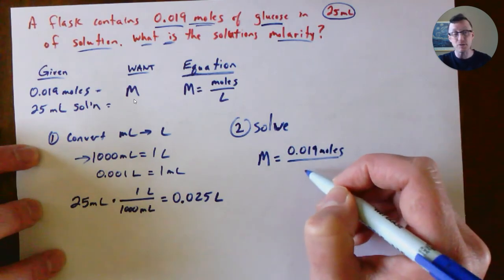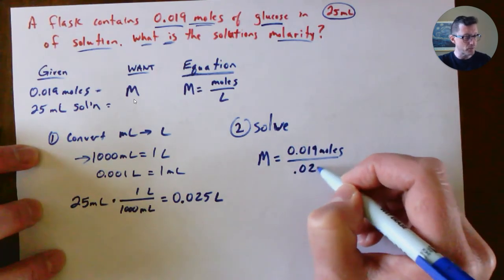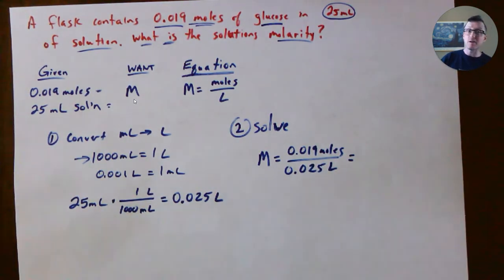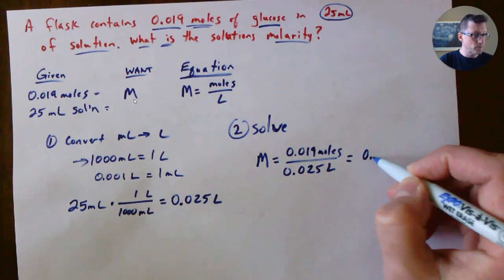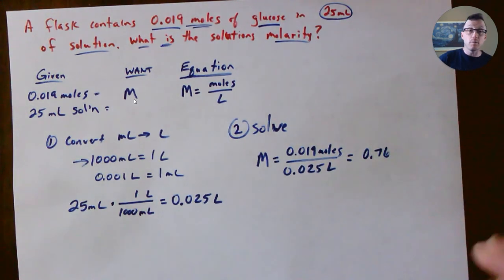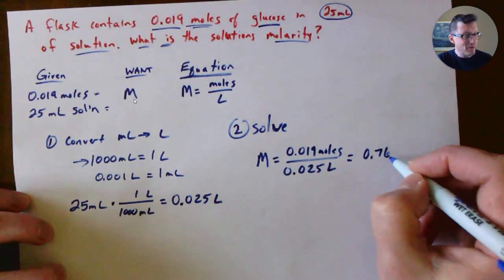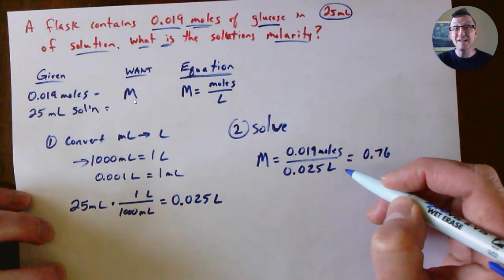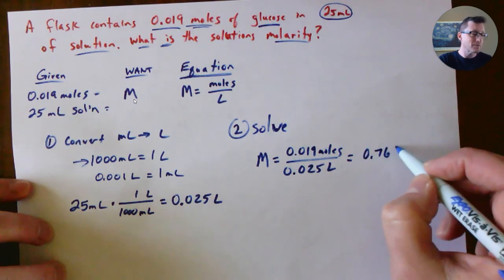I now know the liters, 0.025 liters. Now I simply take my calculator and calculate 0.019 divided by 0.025 equals 0.76. What are the units? We have moles on the top, liters on the bottom, and none of those cancel out, so it's moles per liter.